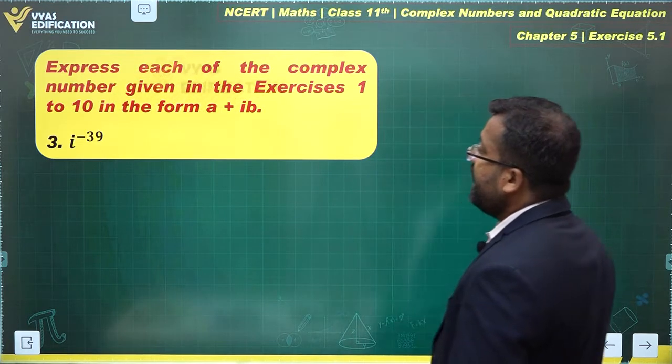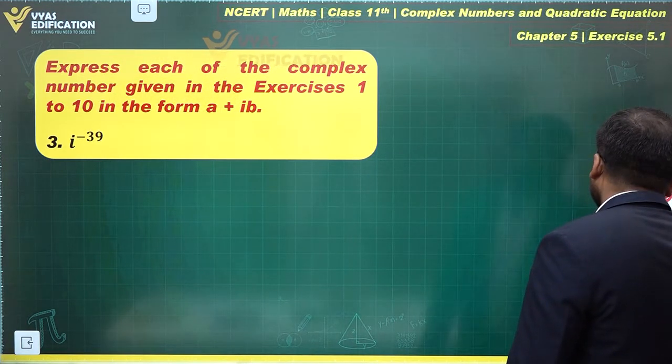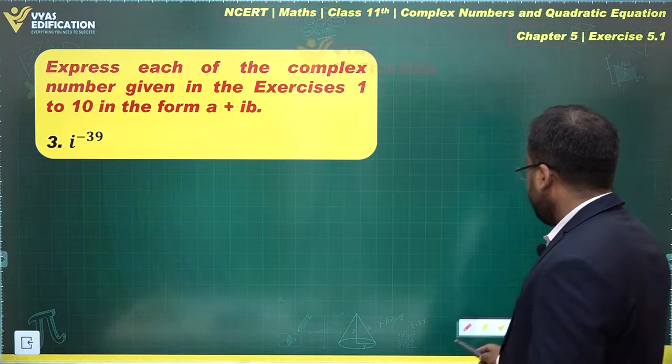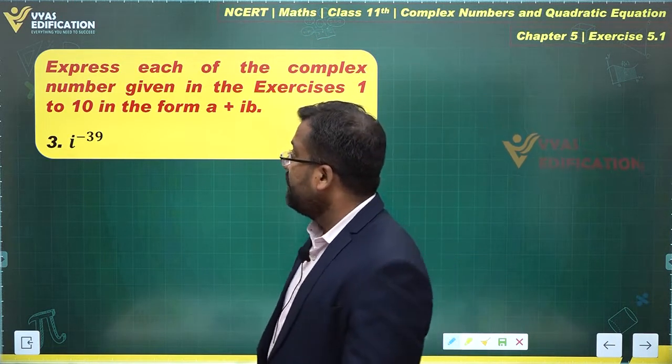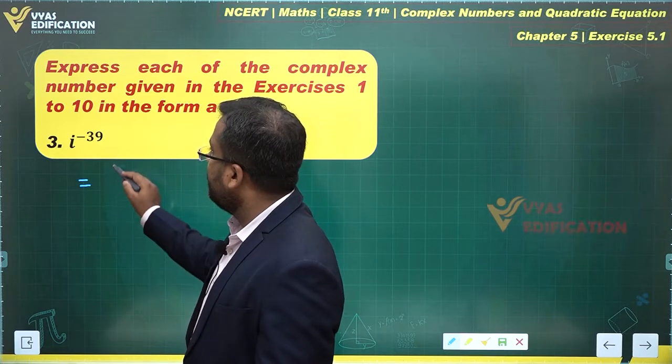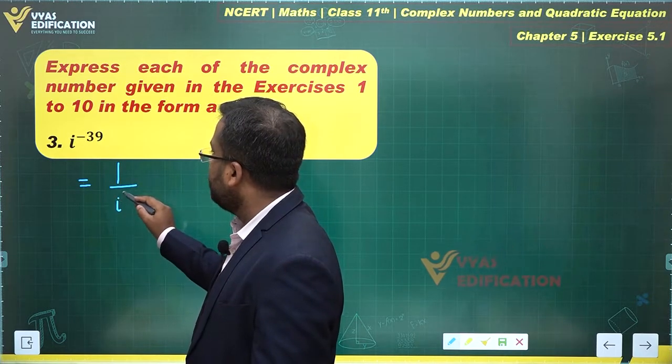Let's discuss this question: i to the power minus 39. Express it in the form a plus ib. How do we express this? First, we have to write it in the form i power 39 in the denominator.